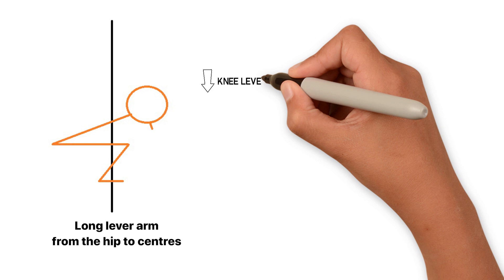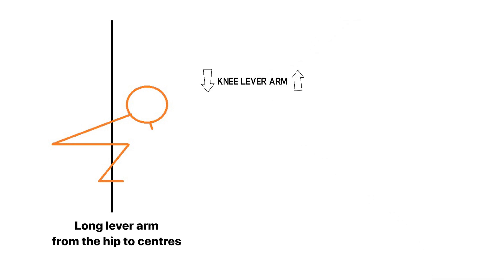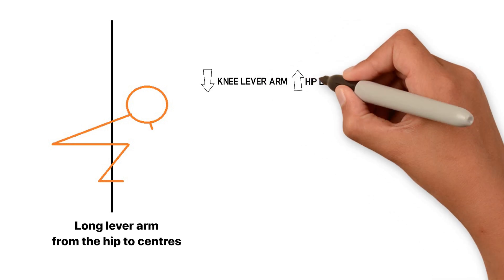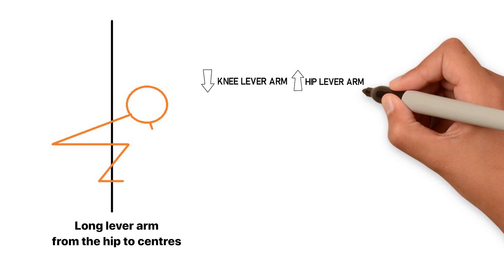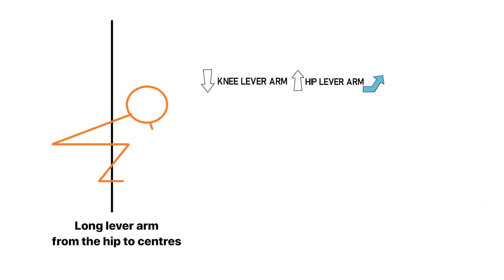If the lever arm of the knee to center is short, it will cause an increase in the lever arm of hip to center, which in turn leads to an increase in trunk forward leaning in order to keep balance while doing squats, causing the back muscles to be loaded up significantly while squatting.